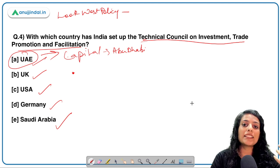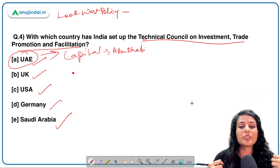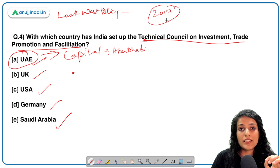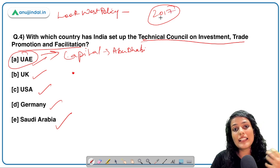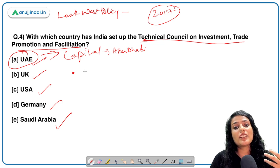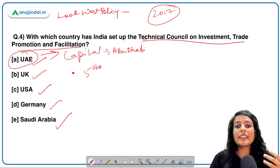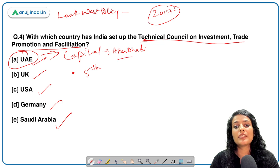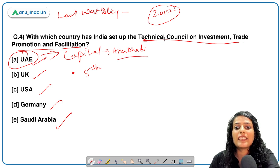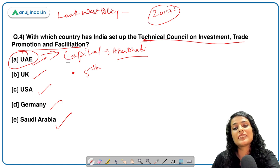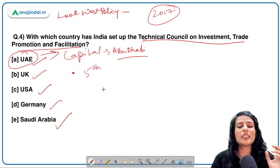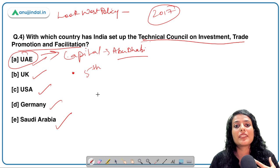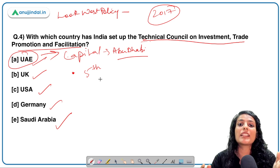UAE also needs India because it wants to reduce its dependency on oil exports and diversify its economy. In 2017, the Crown Prince of Abu Dhabi was the chief guest at the Republic Day event. UAE is also India's fifth largest trade partner, and a large number of Indian immigrants reside in West Asian countries. The Technical Council aims to reduce the burden on electronic payments and encourage hassle-free trade.